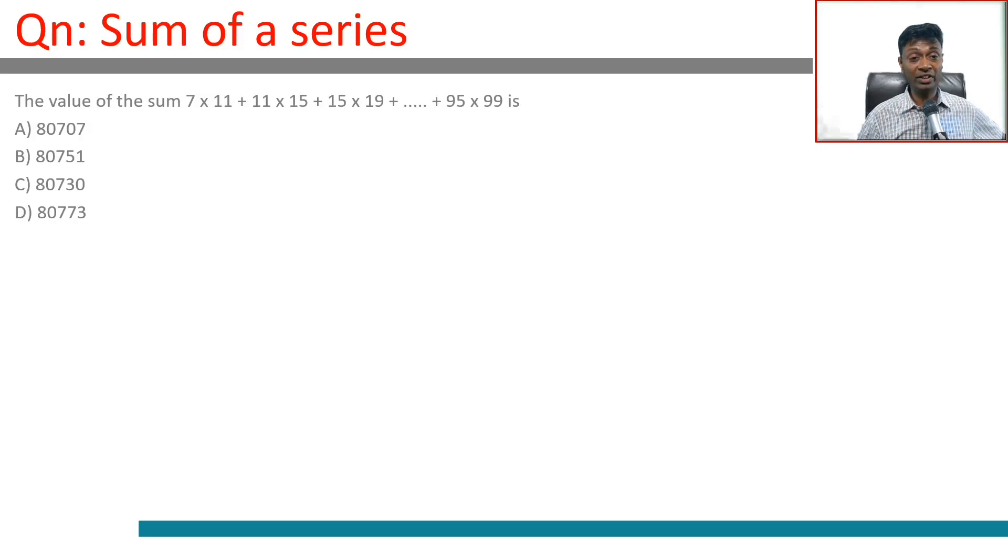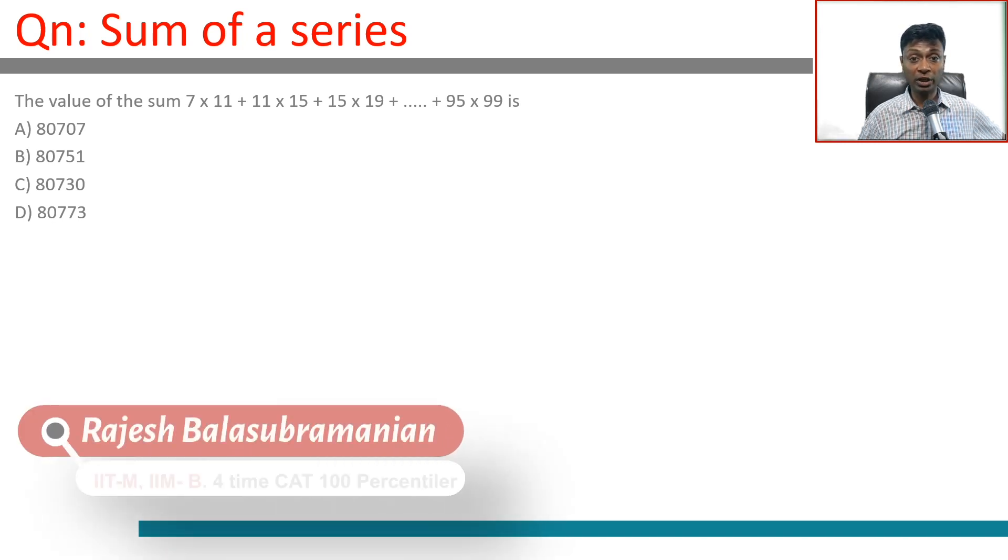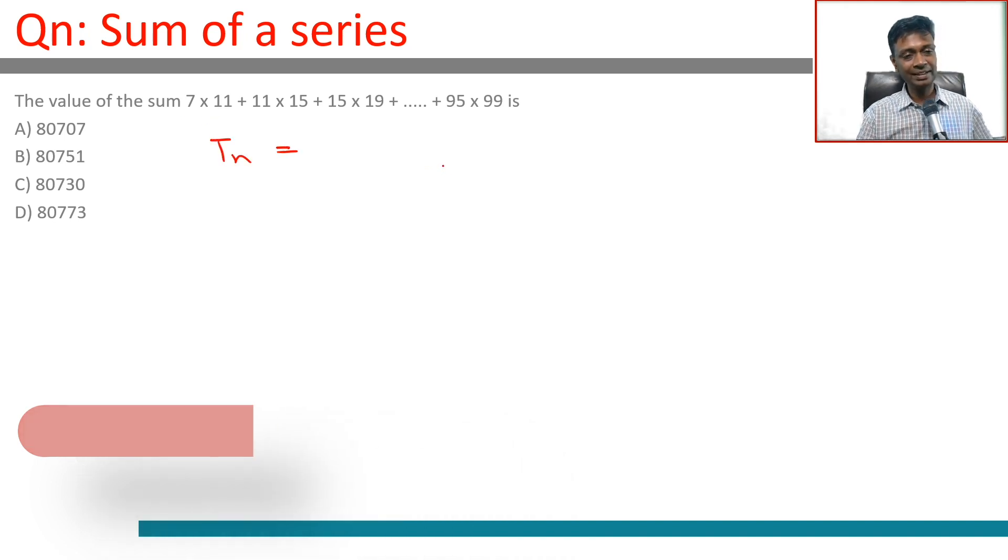The problem is to find 7 into 11 plus 11 into 15 plus 15 into 19 all the way till 95 into 99. For these questions, there's some way of having nth term that we can simplify. The nth term here we can say is n into n plus 4, that part is clear.